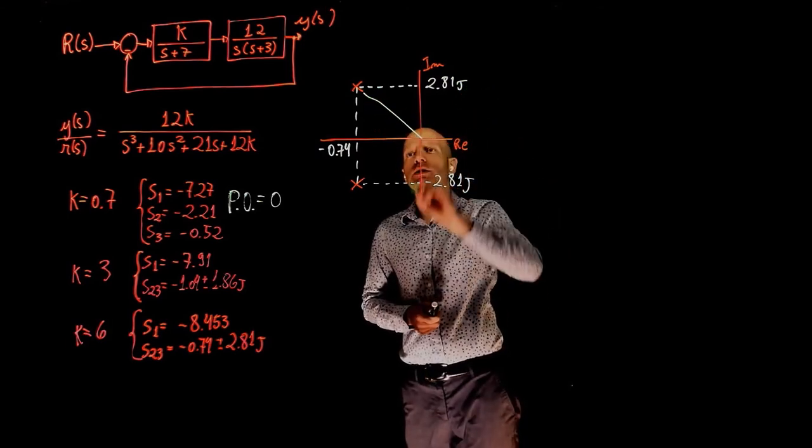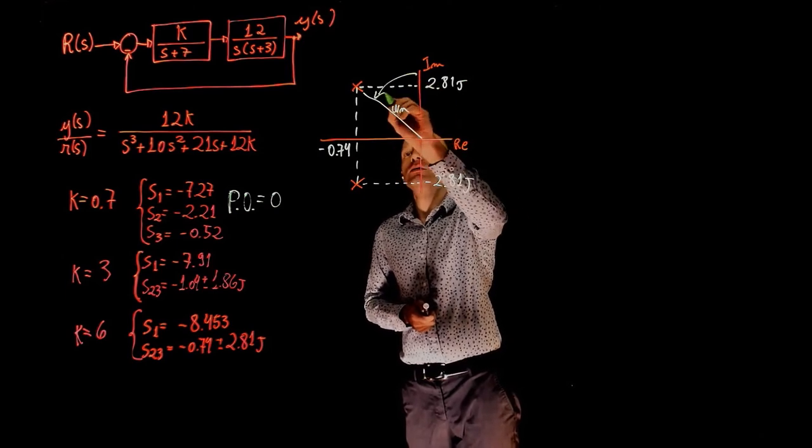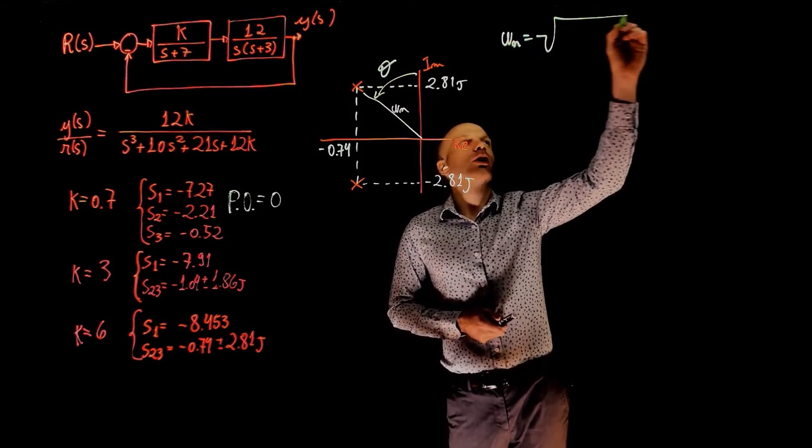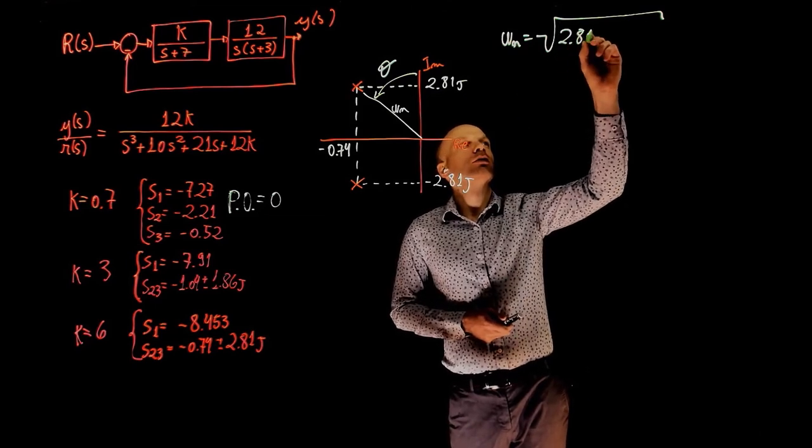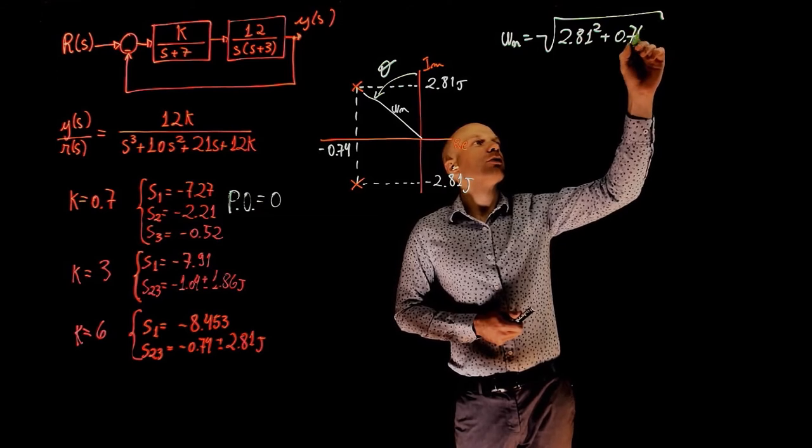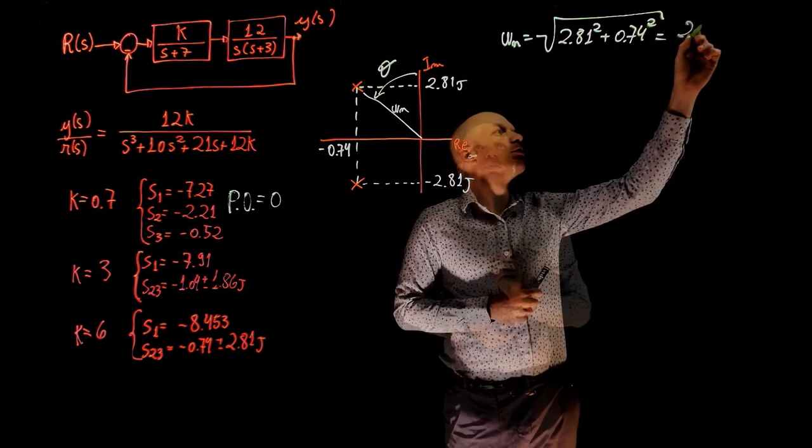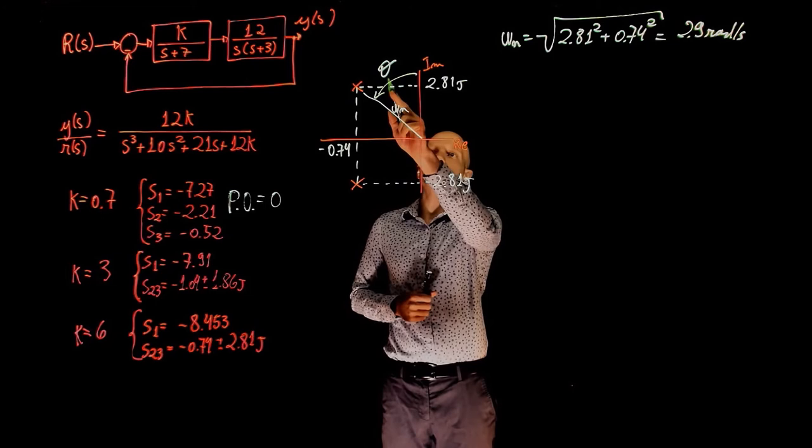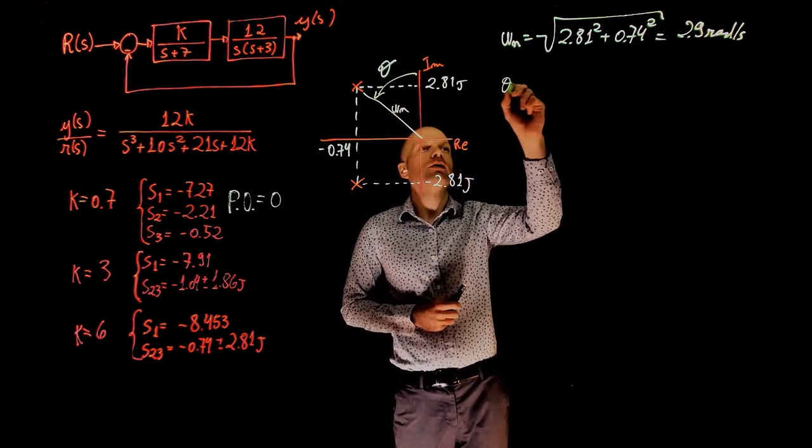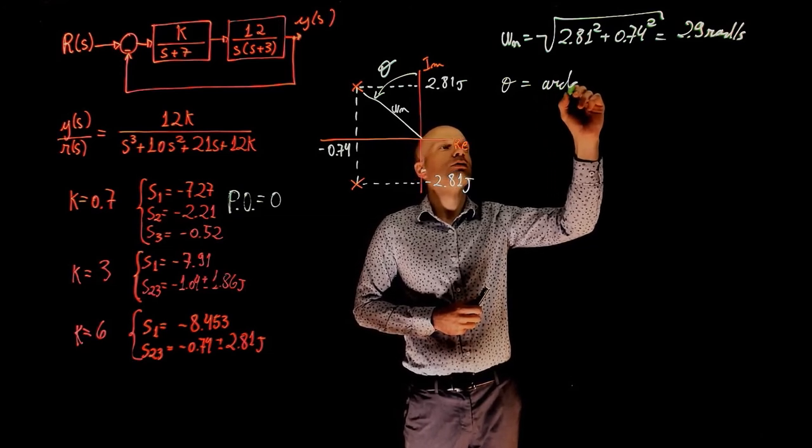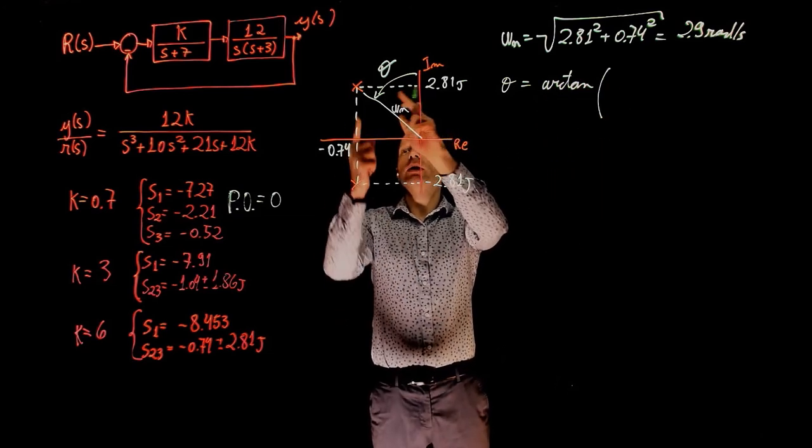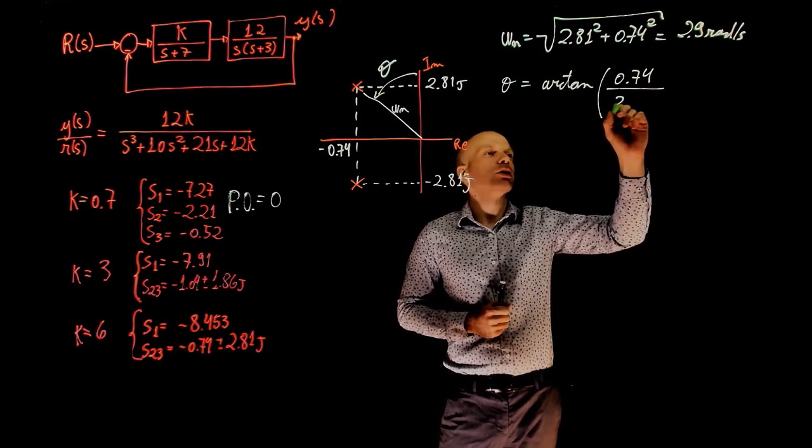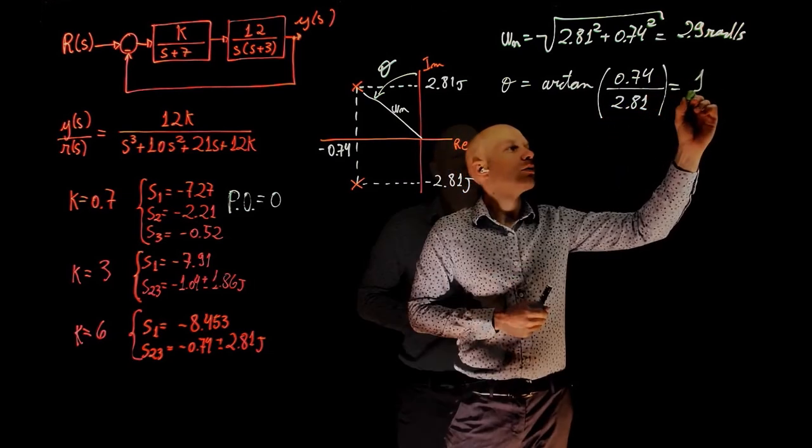ωn is again this distance here and let's call this angle theta. ωn now from trigonometry is the square root of 2.81 squared plus 0.74 squared, and this is equal to 2.9 radians per second. We can now calculate this angle first and then from the angle find ζ. That angle from trigonometry is the arc tangent of the real part divided by the imaginary part, 0.74 divided by 2.81, and that is 14 degrees.